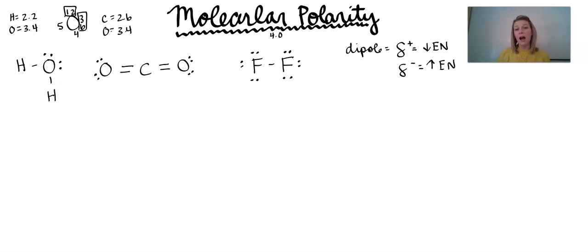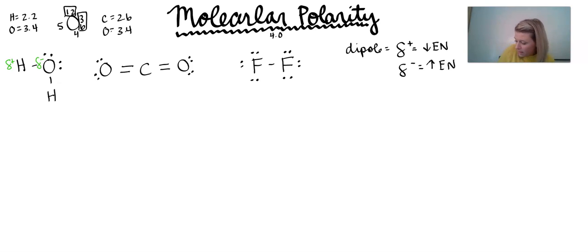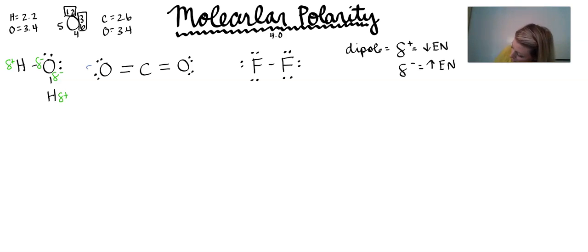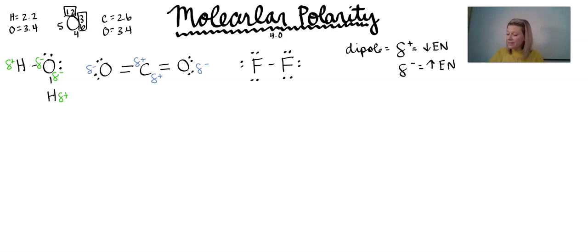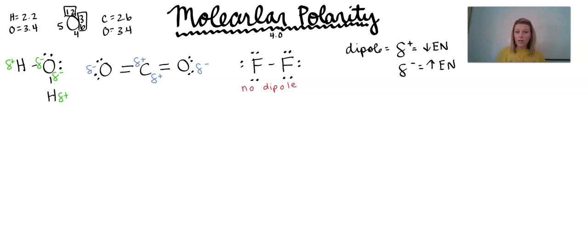On H₂O, the more electronegative atom — oxygen — is assigned the partial negative on each bond. So H is the partial positive and O is the partial negative on both bonds. On CO₂, O is the more electronegative element so it's assigned partial negative, while C is assigned partial positive on both sides. And for F₂, these two atoms have the same electronegativity values, which means there is no dipole present — they share electrons equally, so no pole is created.